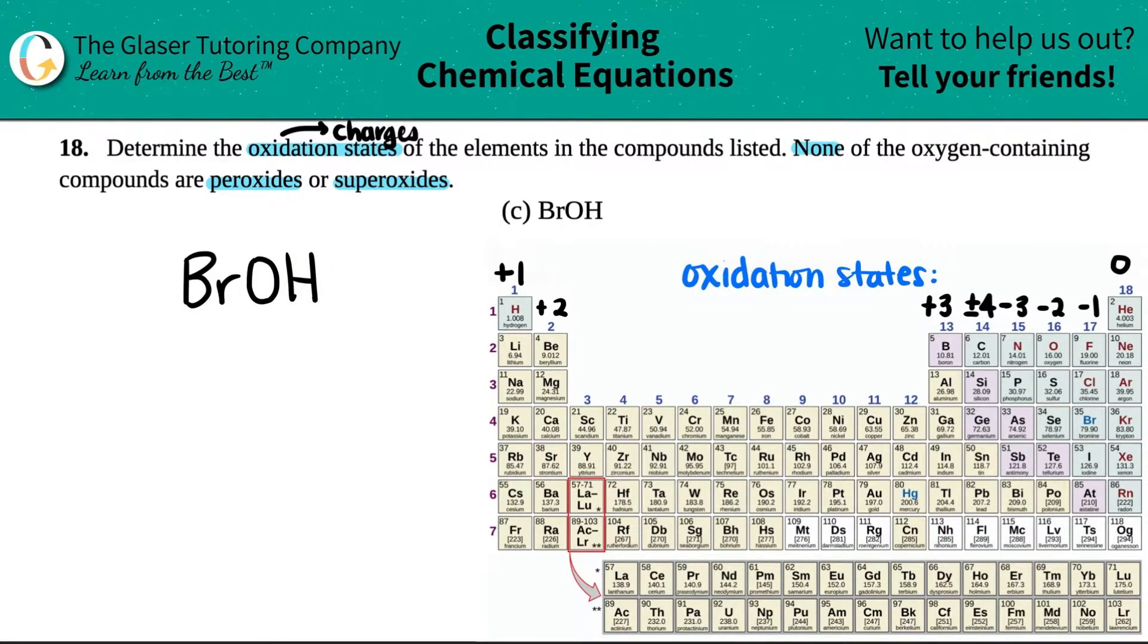First things first is that you should memorize your oxidation state trend on the periodic table. If you want a full rundown of why these charges exist like this, you can check out number 16A in the playlist.